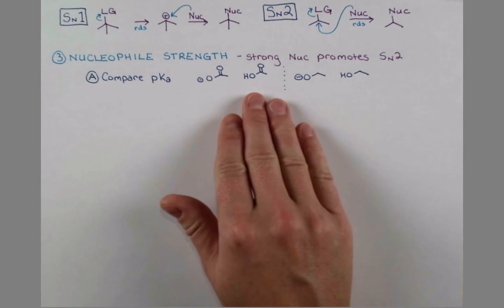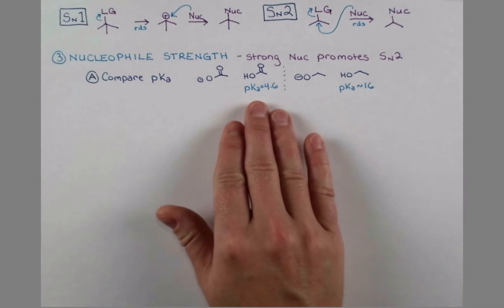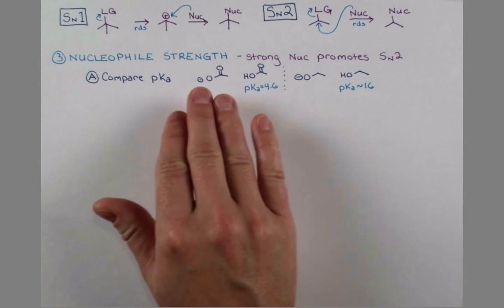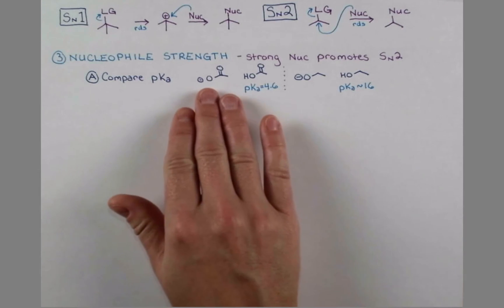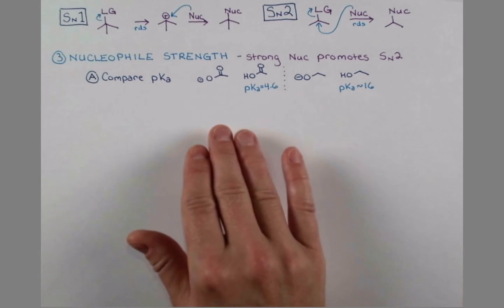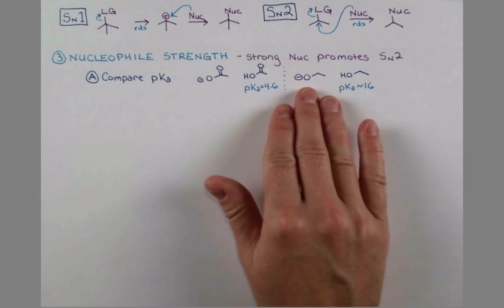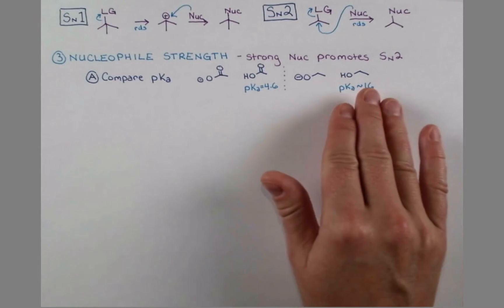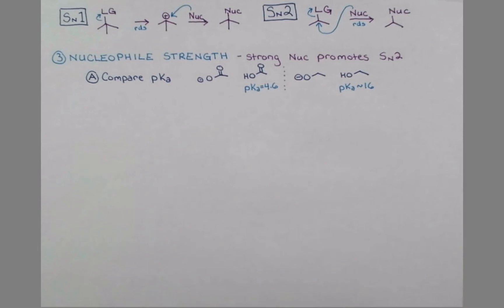This conjugate acid, acetic acid, has a pKa of 4.6, and ethanol has a pKa of about 16. Acetic acid is a stronger acid, which means it has a weaker conjugate base. Acetate is resonance stabilized, so it doesn't mind losing this proton and sitting around by itself quite as much. This makes ethoxide our stronger nucleophile. The conjugate acid didn't want to lose that proton in the first place, so this conjugate base is more unstable, it's more reactive, it's a better base and a better nucleophile.